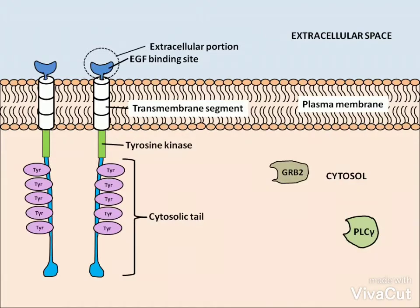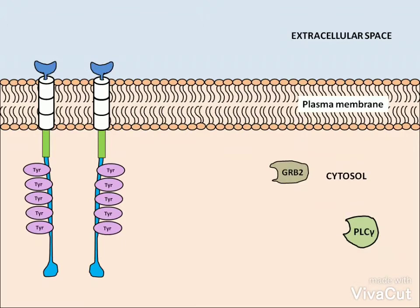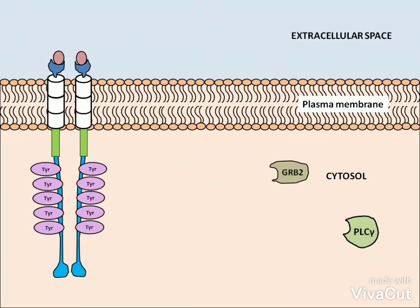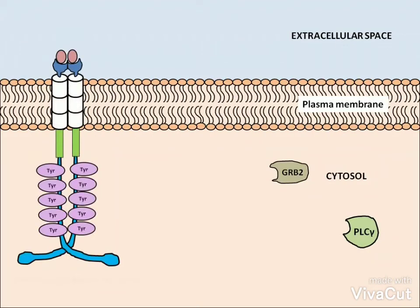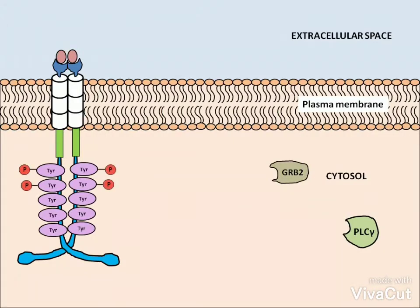Now we will discuss the activation of receptor tyrosine kinase. The process of activation starts with the binding of EGF, which acts as a ligand or messenger for the receptor tyrosine kinase. This ligand binding causes receptor aggregation or clustering within the plasma membrane. Once the receptors cluster, the tyrosine kinase associated with each receptor phosphorylates the tyrosines of the neighboring receptor. This is called cross-phosphorylation.